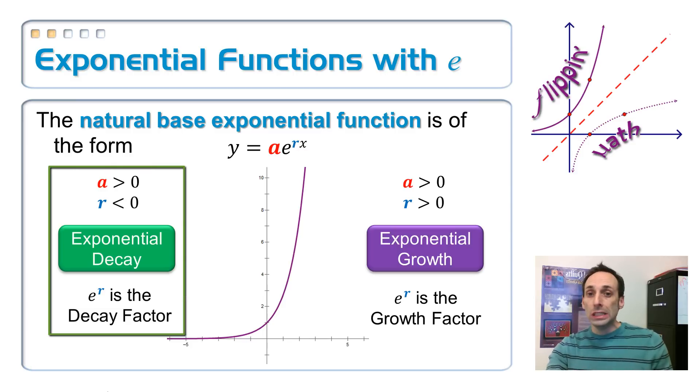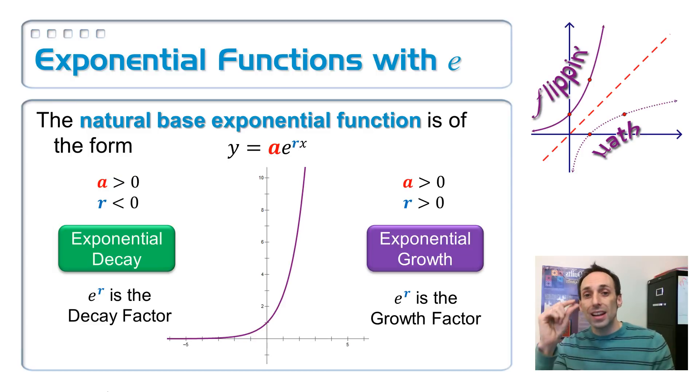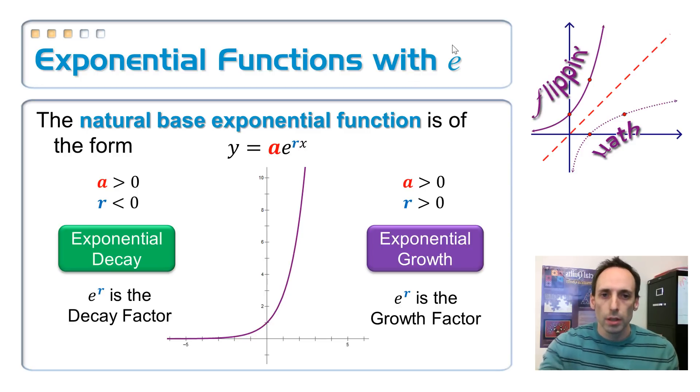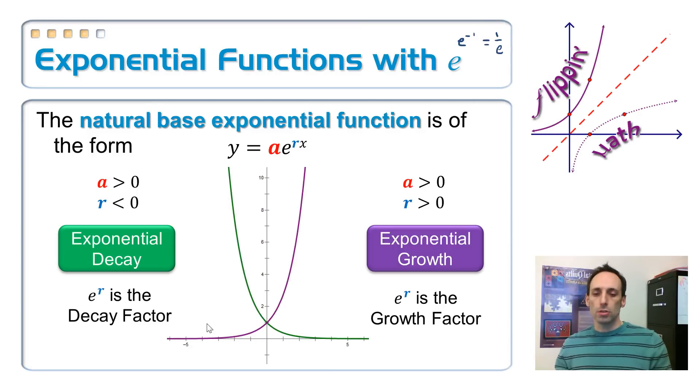Over here on the left hand side, it's exponential decay if your R value, your exponent, so basically this is the rate, if it's less than zero, if it's a negative number. And here's the reason why. If I have this E to the negative one power, it's a negative exponent. And this essentially means one over E, which now is a fraction between zero and one. So it's an exponential decay function.